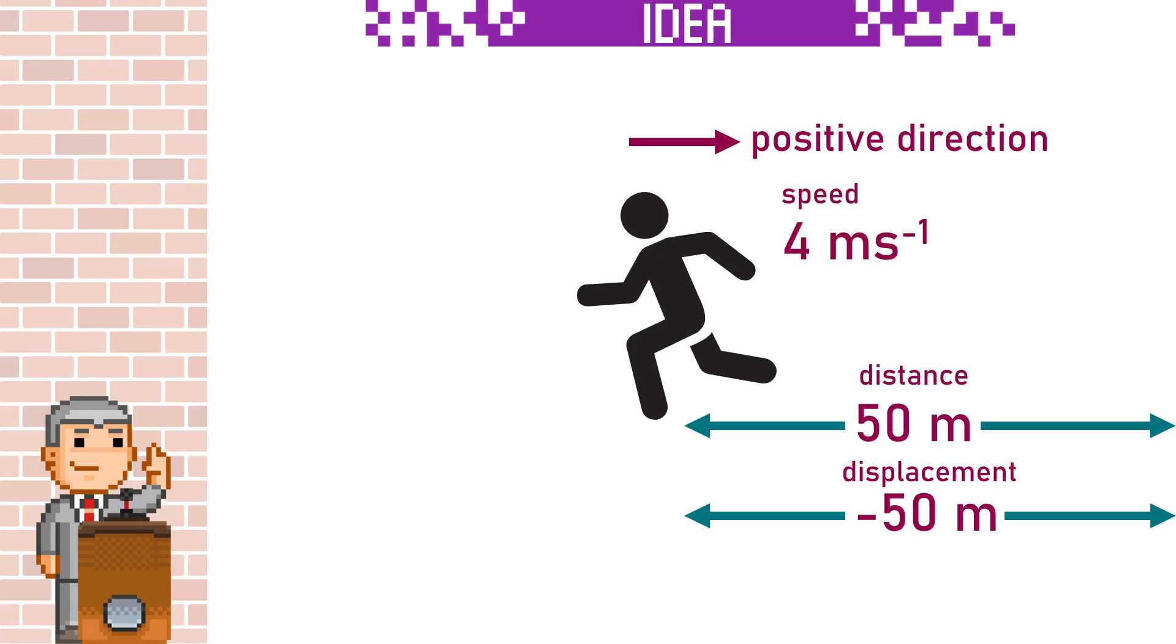We can say he ran a speed of 4 metres per second but his velocity was minus 4 metres per second. Acceleration will always have a direction, so is an example of a vector.